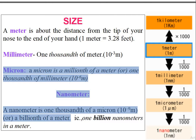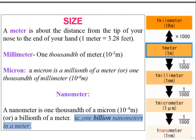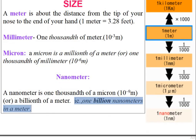A nanometer is a 1,000th of a micron, or 10⁻⁹ m, or a billionth of a meter — i.e., 1 billion nanometers in a meter.